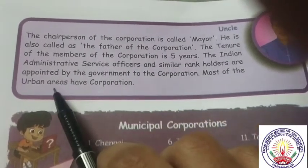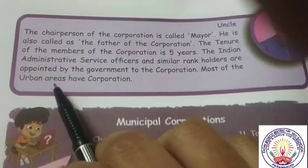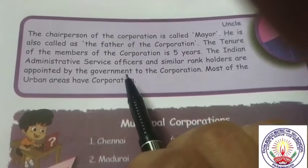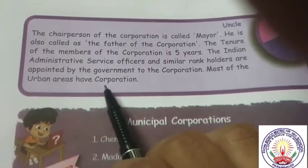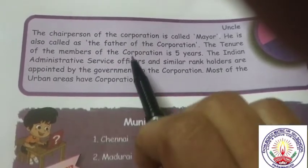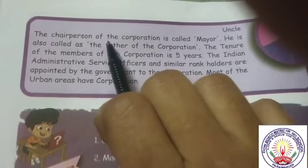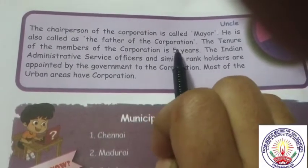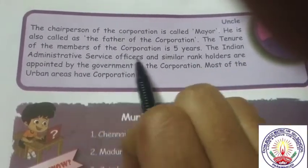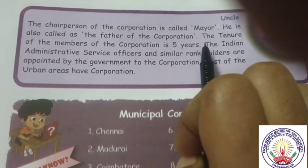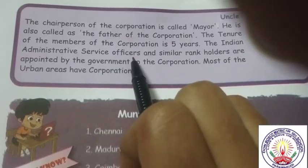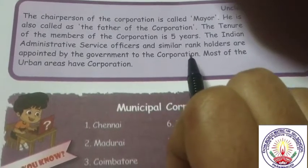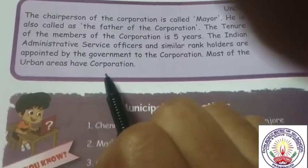Urban areas have corporations. The chairperson of the corporation is called Mayor. He is also called the father of the corporation. The tenure of the members of the corporation is 5 years. The Indian Administrative Service Officers and similar rank holders are appointed by the government to the corporation. Most of the urban areas have corporations.